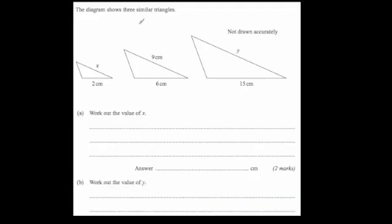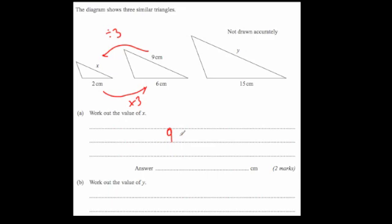The diagram shows three similar triangles. To get from 2 to 6, you times by 3, so the larger triangle is 3 times bigger than the small one. For part A, to find x we go back from the larger triangle and divide by 3. So 9 divided by 3 is equal to 3 centimetres.